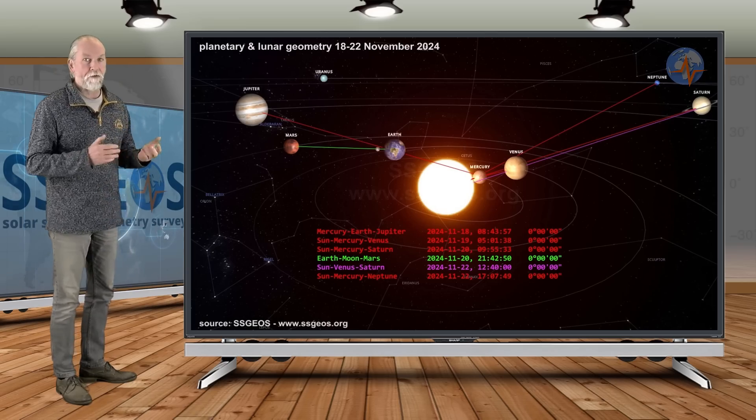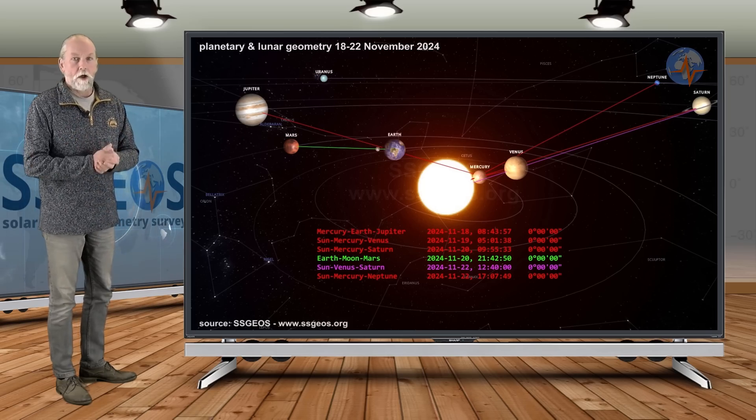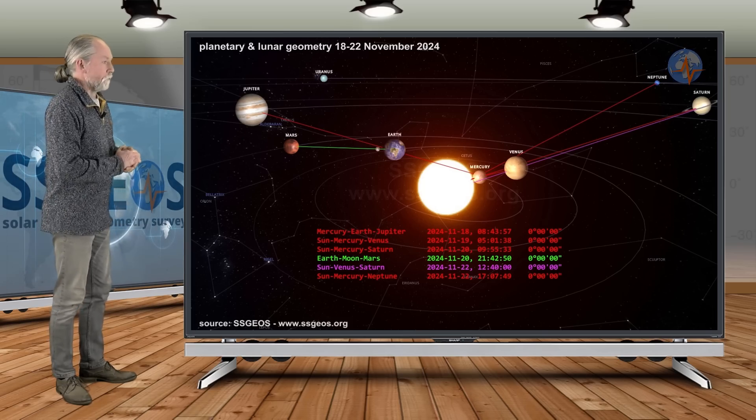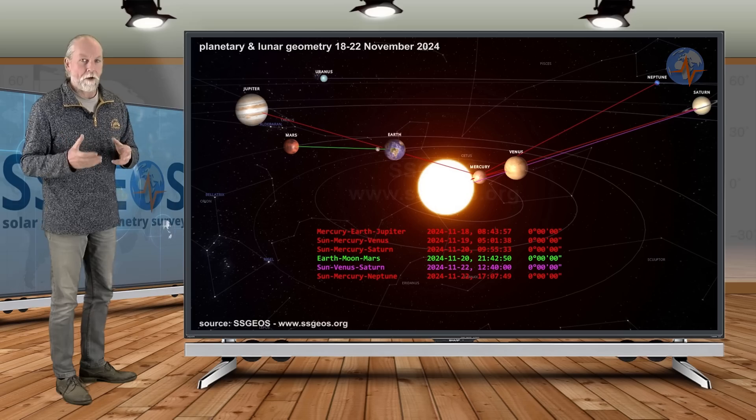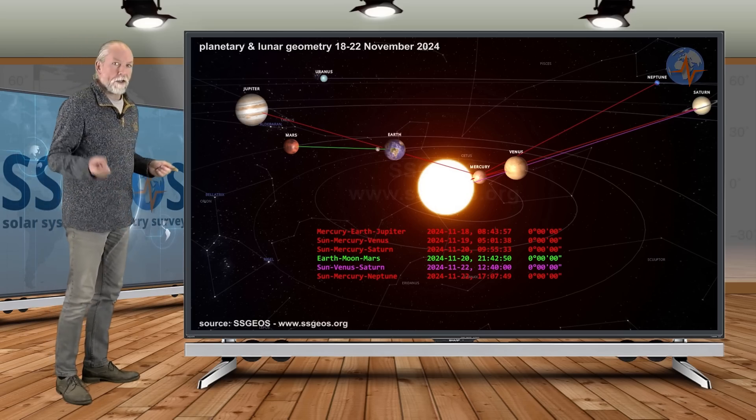The last time a really large earthquake occurred, magnitude 7.8, was in February 2023 in Turkey, and that followed also on a convergence of two planetary conjunctions. The difference is that at that time it happened at full moon as well.